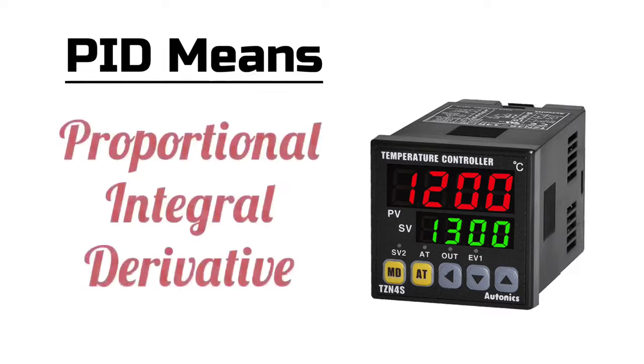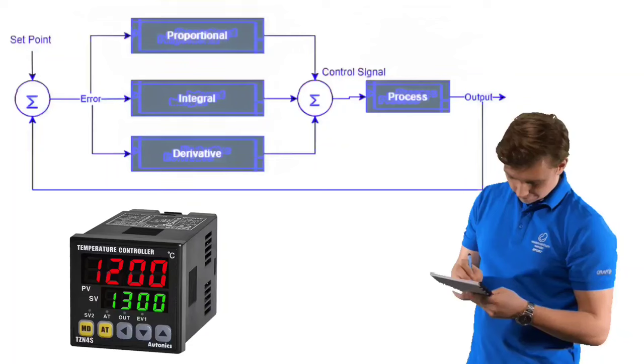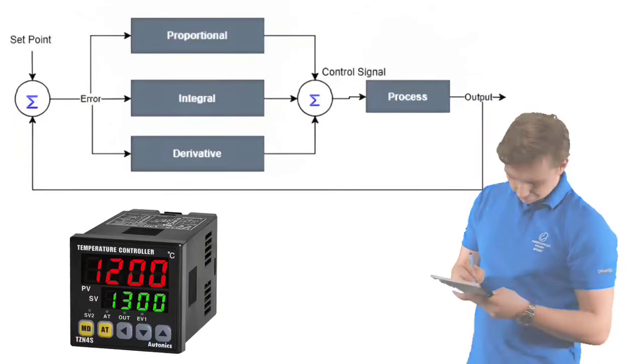PID stands for proportional, integral, and derivative. It is a control loop that regulates the process and maintains it at the desired set point.